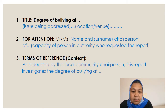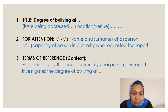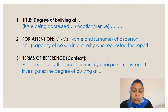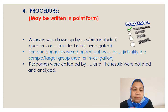Here is an example. You must include the headings as indicated: first your title, then for attention, then terms of reference. For example: 'As requested by the local community chairperson, this report investigates the degree of bullying at this school.' Your fourth heading is the 'Procedure', which may be written in point form. The procedure is the process you followed in order to conduct your survey, informing the reader of how you conducted it.